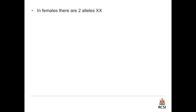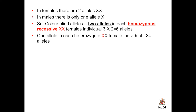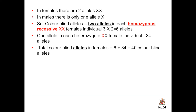In females there are two alleles (XX), and in males there is only one allele (X). The number of colorblind alleles can be calculated by counting alleles: we have two alleles in each homozygous recessive female, and there are 3 color blind females, so that equals 3 multiplied by 2, giving 6 alleles. Also, there is one allele in each heterozygous female, and we have 34 heterozygous females, giving 34 alleles. Total colorblind alleles in females equals 6 from homozygous recessive plus 34 from heterozygous, giving 40 colorblind alleles.